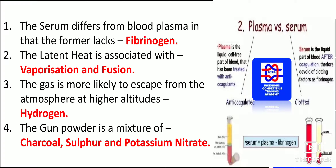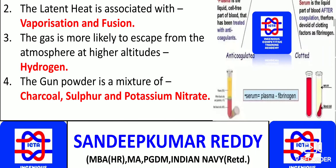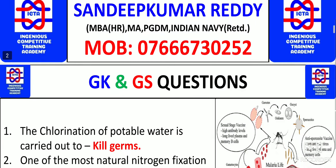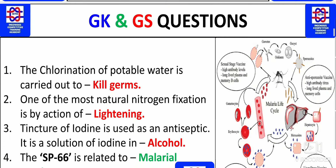Gunpowder is a mixture of charcoal, sulfur, and potassium nitrate. These three components are used to make gunpowder.